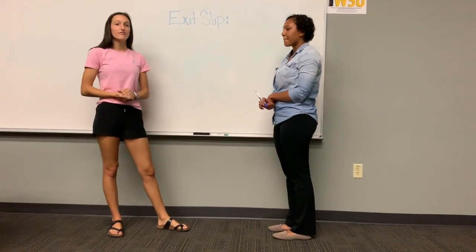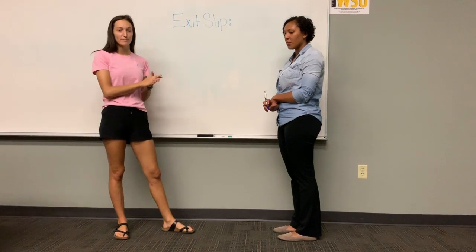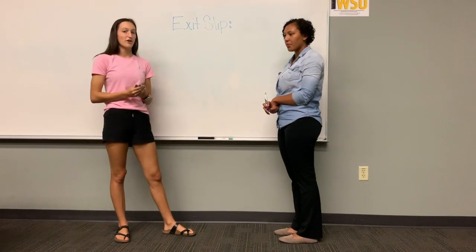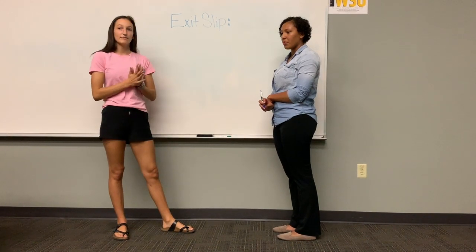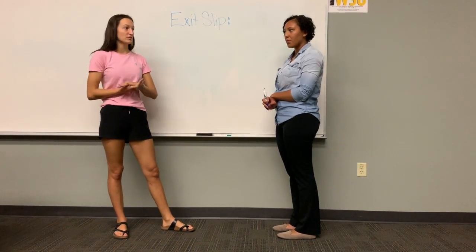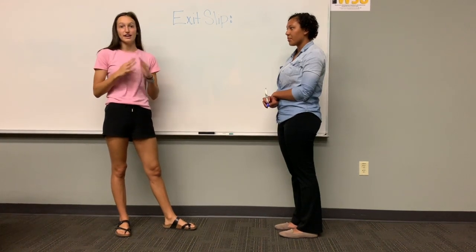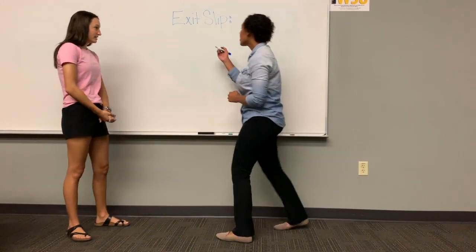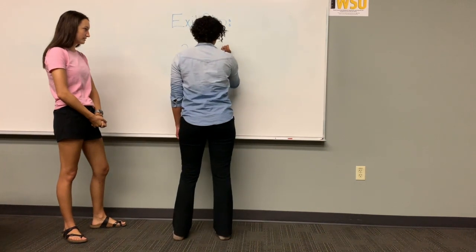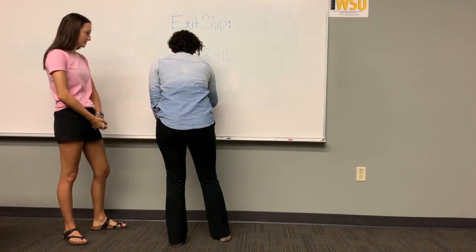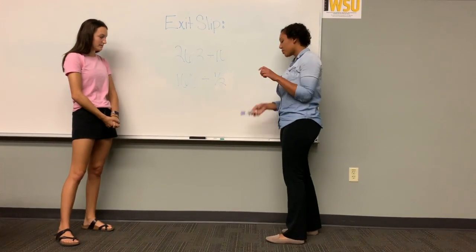Today in class we went over finding patterns in any given problem to get to your solution. The first concept was dividing a decimal by powers of 10 — you move the decimal point to the left however many zeros follow the 1. The other concept was dividing by fractions: we worked with whole numbers dividing by one half and flipping that denominator to turn it into a multiplication problem. Now we are going to have an exit slip with two problems: 263 divided by 10, and 160 divided by one half. You have to turn this in before leaving the class.